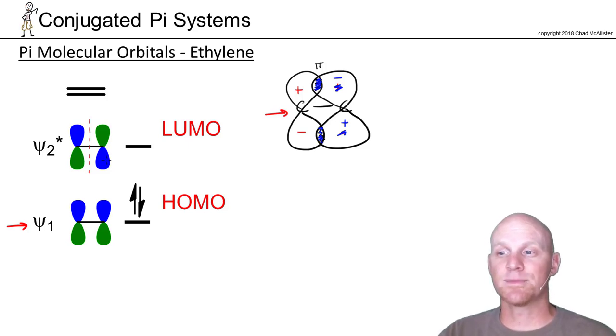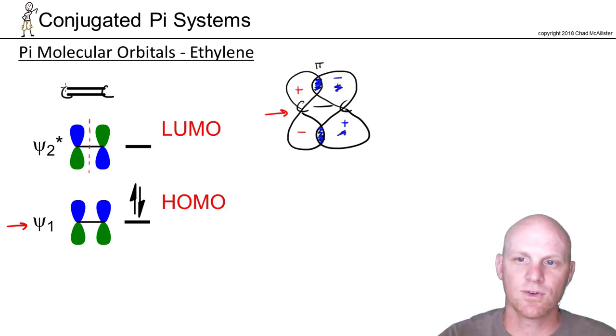With conjugated systems, it's got a little bit more complex. But a couple things we need to know. So with ethylene here, once again, we just have two carbons each with a p orbital.